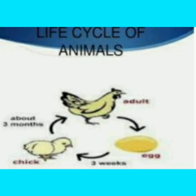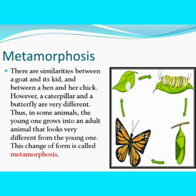Let's see what is metamorphosis. There are similarities between a goat and a kid, and between a hen and a chick. However, a caterpillar and a butterfly are very different. Thus, in some animals, the young one grows into an adult animal that looks very different from the young one. This change of form is called metamorphosis.